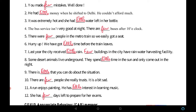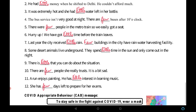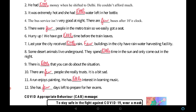There is ___ that you can do about the situation — 'little.' There are ___ people she really trusts — 'few.' Arun enjoys painting; he has ___ interest in learning music — 'little' interest means almost no interest. She has ___ days left to prepare for her exams — 'few' days, as days are countable.